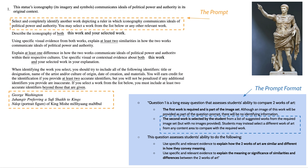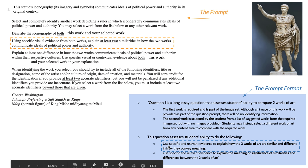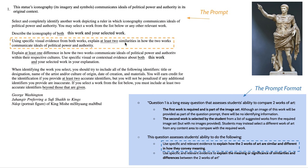Basically, the question is asking you to select and completely identify another work depicting a ruler in which iconography communicates ideals of political power and authority. You're finding another image of some sort of political figure — there are lots of them in the AP curriculum, especially in the ancient Mediterranean unit. The next part asks for specific visual evidence from both works, and how they convey meaning. You'll see some sort of theme being indicated in these kinds of prompts.